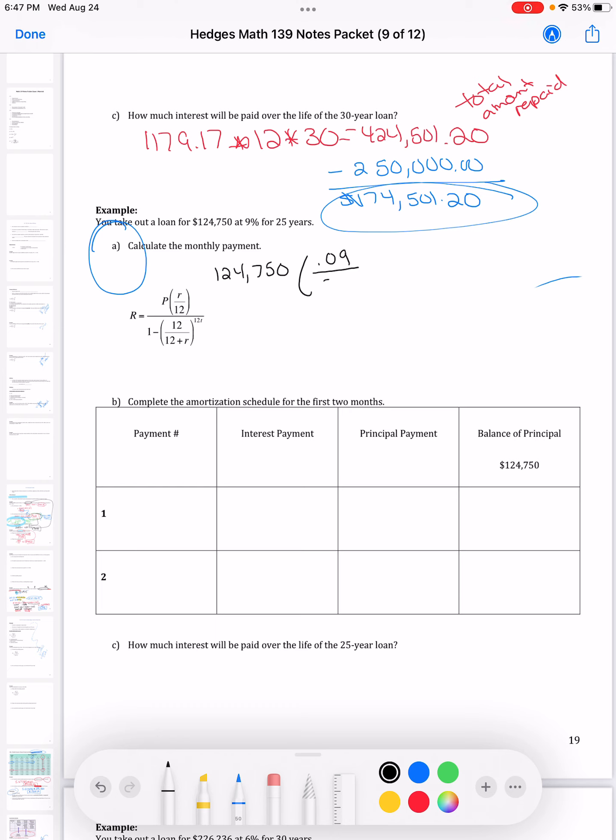My interest rate is 0.09 divided by 12, 1 minus. Just remember on the bottom, go ahead and add that interest rate there. Don't put the plus sign, just go ahead and squish them all together. And that's for 25 years.